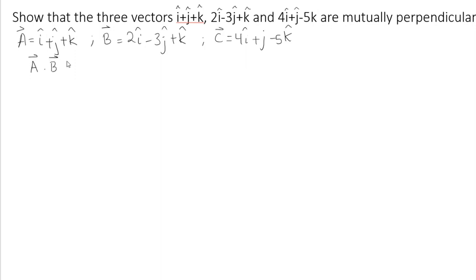So A dot B will be (i+j+k) dot (2i-3j+k). According to the definition of dot product, I know that i·i, j·j, and k·k equals one.